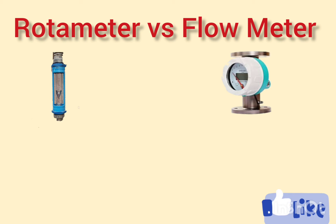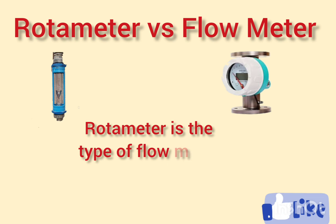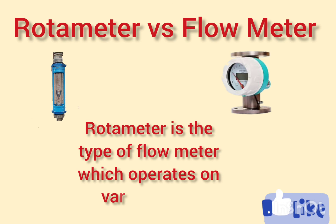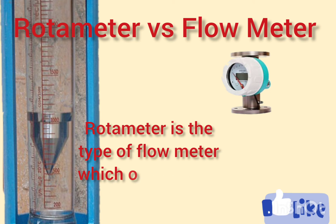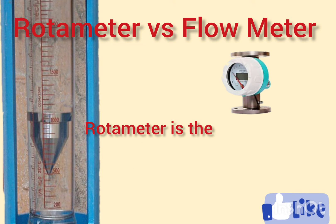Let's start with the basic definition of rotameter. The rotameter is a type of flow meter that operates based on the principle of variable area. It consists of a tapered tube with a float inside that rises or falls depending upon the flow rate of the fluid.